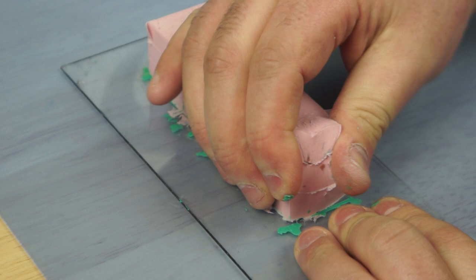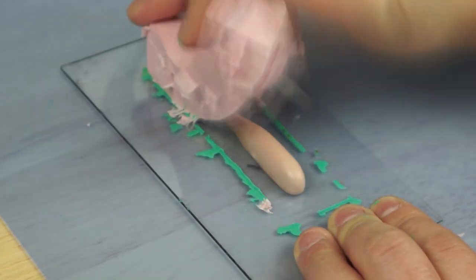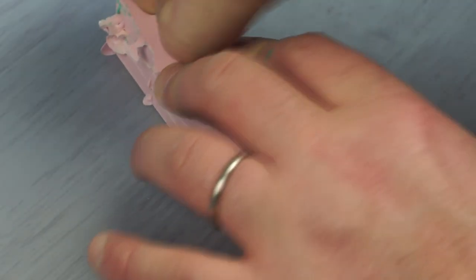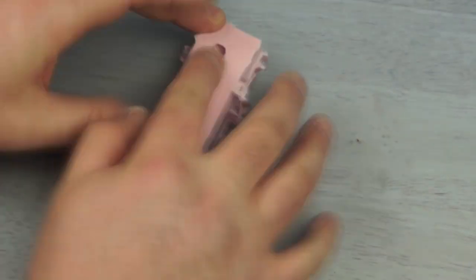Once the silicone had fully cured, I gently peeled it away from the plug and the glass. And then just spent a bit of time tidying up any loose bits of silicone and removing the paddle tail from the mould.